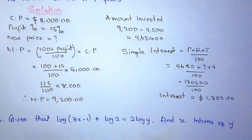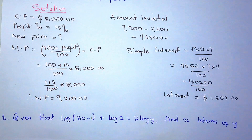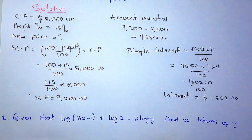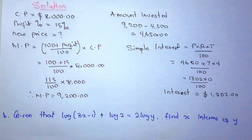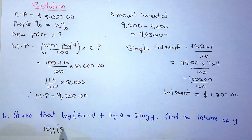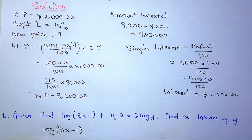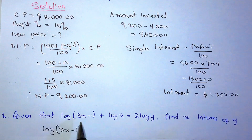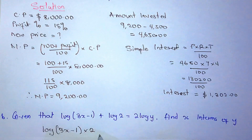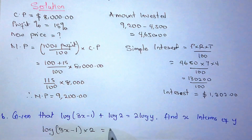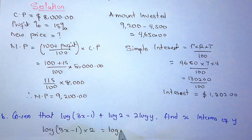Now the b part of the question says: given that log(3x − 1) + log 2 = 2 log y, express x in terms of y. So we want to make x the subject of the expression. We have log(3x − 1) plus log 2 — they have the same base log 10 and they are adding, so they multiply. That equals 2 log y, which is the same as log(y²).